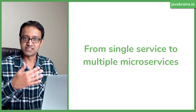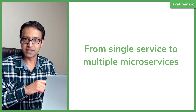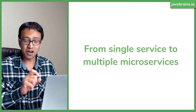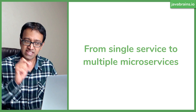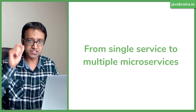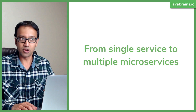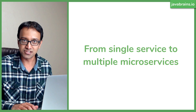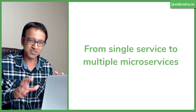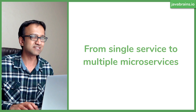So we've looked at property files and profiles and all those things which let you configure your Spring Boot applications, which is great for configuring single applications. But now let's move our focus from single services to multiple microservices which run together. We're looking at configuring this whole ecosystem of different microservices which are all talking to each other, so the complexity increases a little bit.